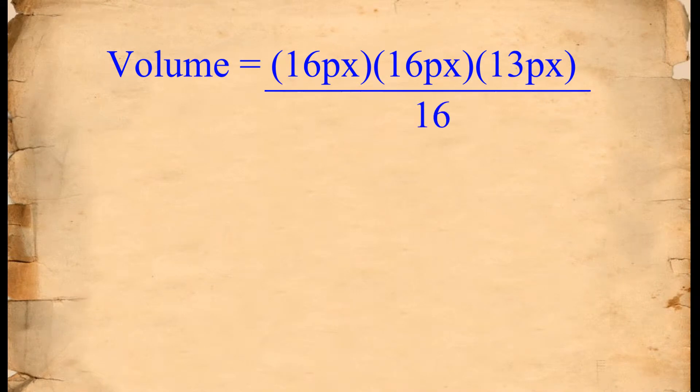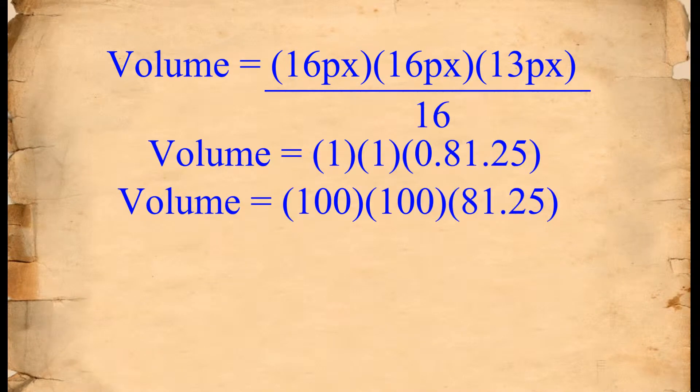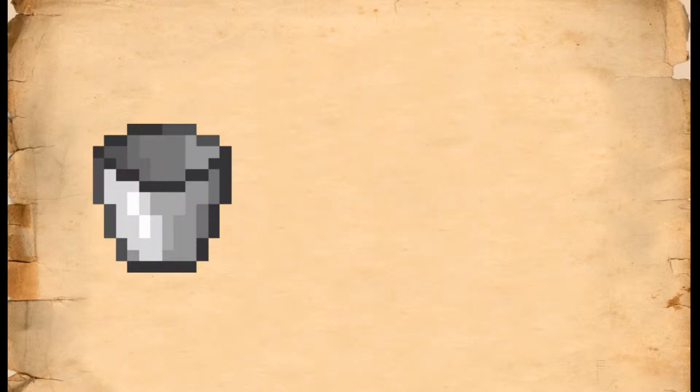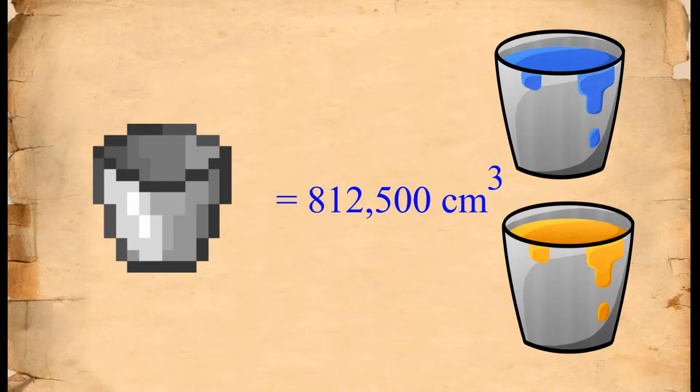We have to convert to meters by dividing by 16 then multiplying by 100 to convert to centimeters. We now know that buckets can hold 812,500 centimeters cubed of water or lava.